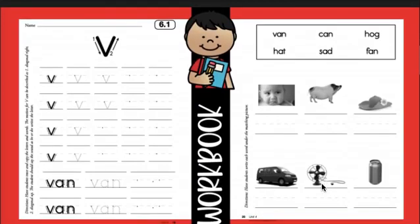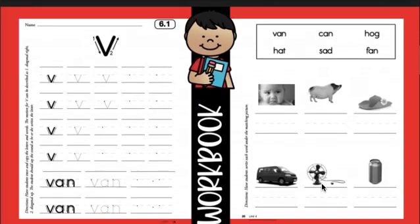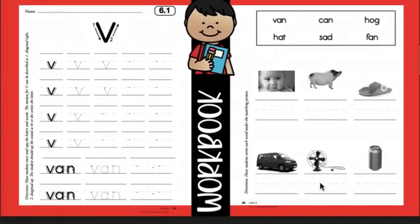Here is what our sheet is going to look like. We're gonna write V. When we write V, we start at the top, make a straight diagonal line down, and then a straight diagonal line up. It's one that you write without ever picking your pencil up. V, V, V, V, V.